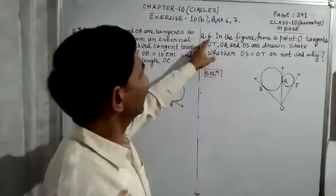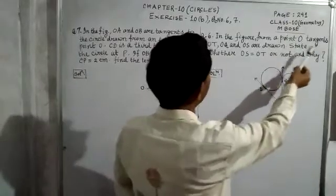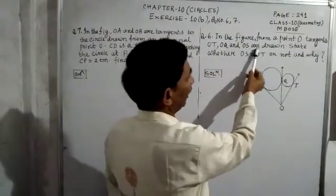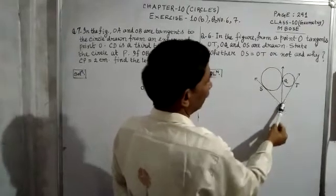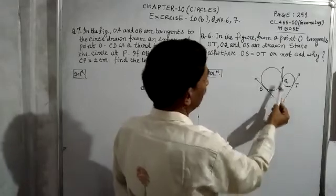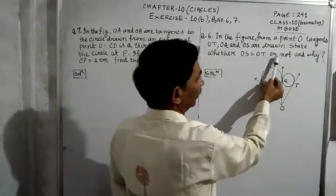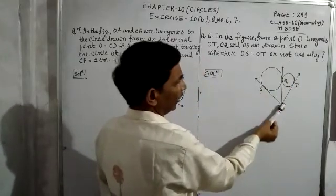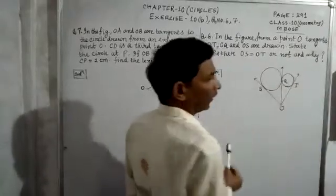First, see question number 6. In the figure, from a point O, tangents OT, OQ, and OS are drawn. From the point O, these three tangents are drawn. The question is whether OS is equal to OT or not, and why.